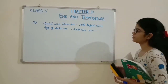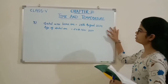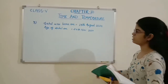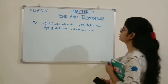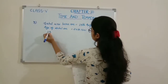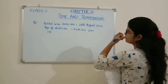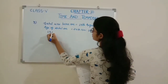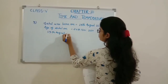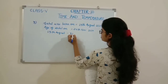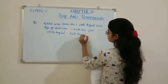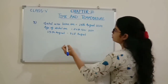As we discussed in previous questions, when we have to find the time duration between months, we calculate it month-wise. So firstly we take the month of August, starting from 13th of August to 31st of August, because we have 31 days in the month of August.